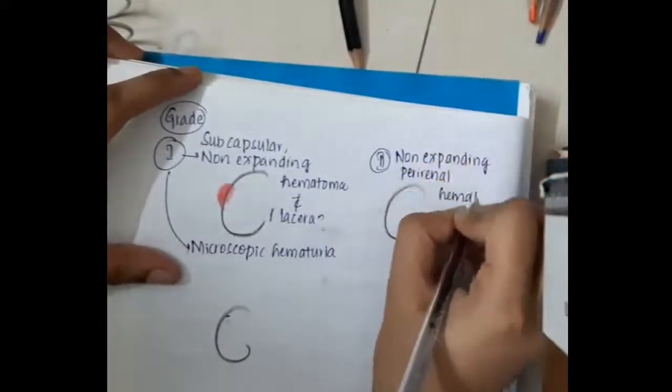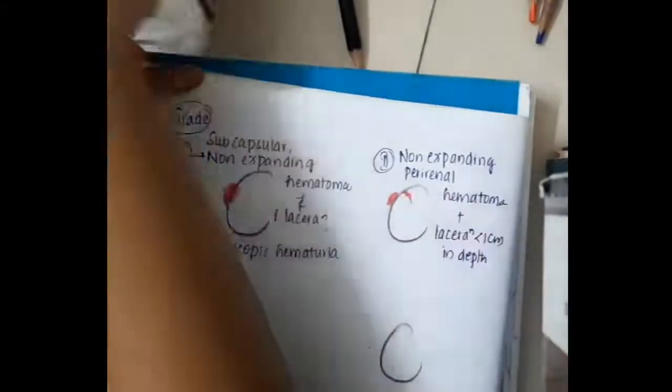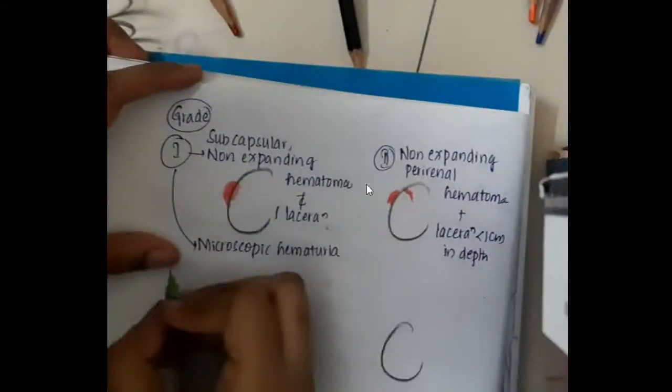In stage 2, there is non-expanding perirenal hematoma with laceration less than 1 centimeter. This is the non-expanding hematoma. This is the laceration less than 1 centimeter.